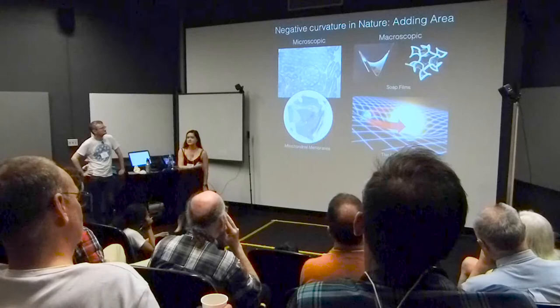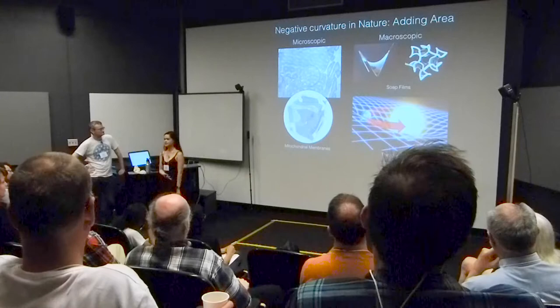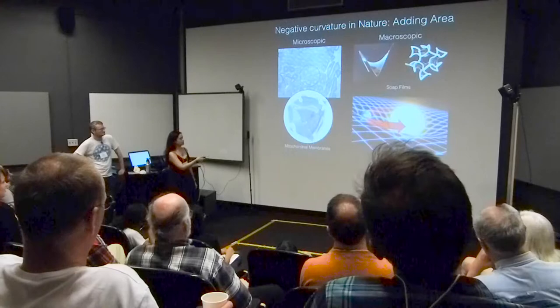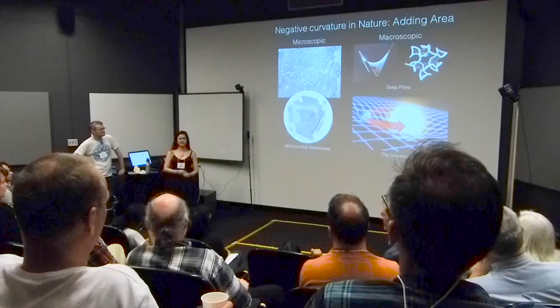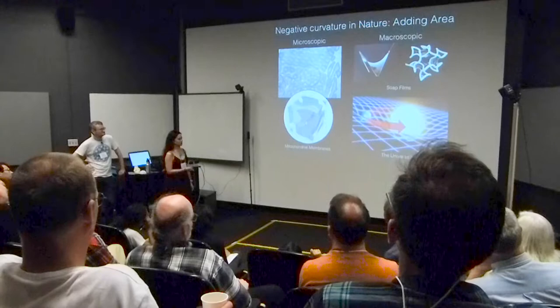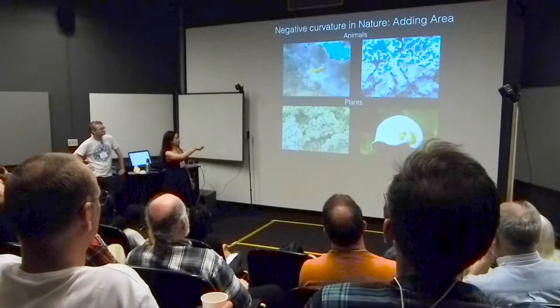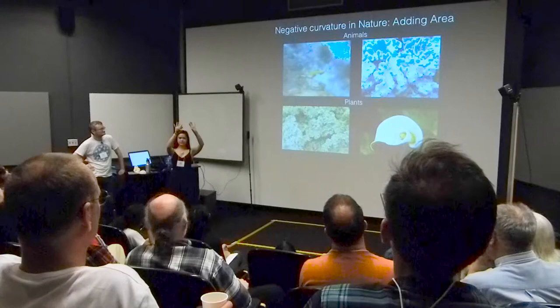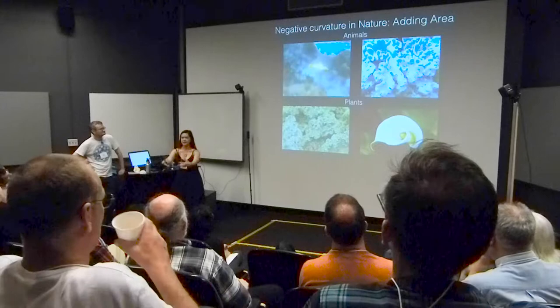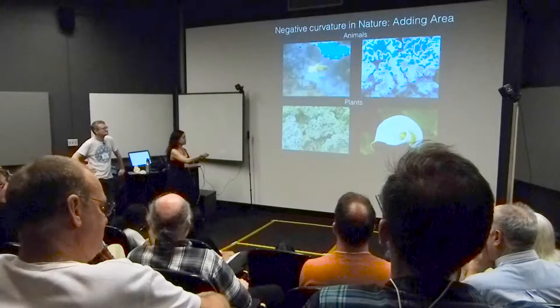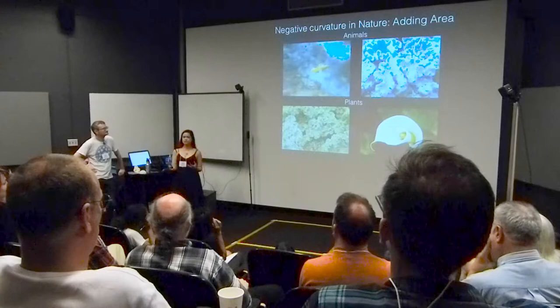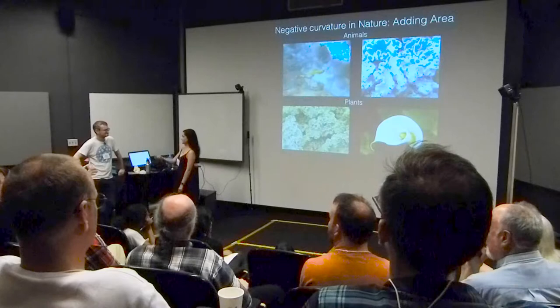There are many places we can see this negative curvature in nature — it's not just mathematical or just in wedding dresses. You also see it in mitochondrial membranes and soap films. Locally there are bits of curvature in the universe. You see it in plants and animals all the time. This nudibranch swimming here uses negative curvature in its mantle, sending traveling waves down it as a way to propel itself forward. Kale and coral use a differential growth pattern — they grow more towards the edge than at the center — to get more nutrients.